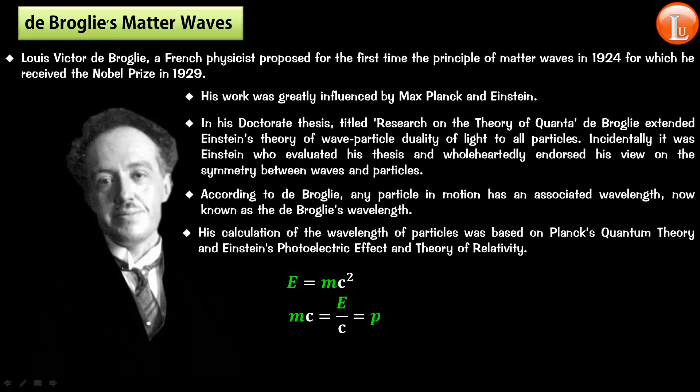And now if I use the Max Planck's quantum theory, E equals H nu, which is H C by lambda. And if I bring this C down, again I get E by C. E by C is H over lambda. So in a way, H over lambda is P. So if H over lambda is P, then lambda equals H over P. That means the wavelength of a particle having a momentum P is given as H over P, which is equal to lambda.